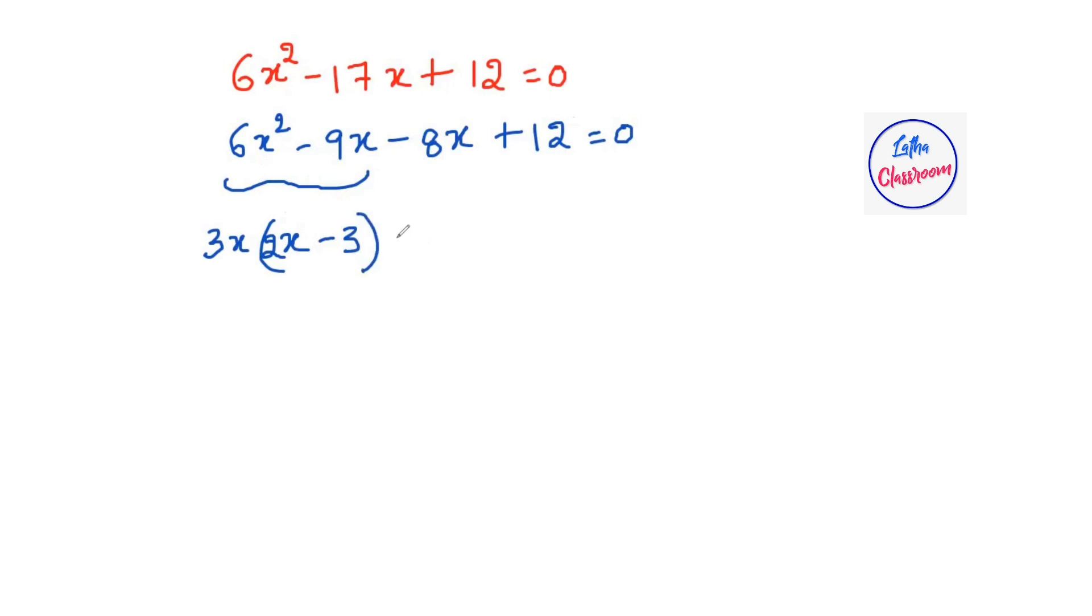And the second two terms, -8x + 12. What is common here? -4 is the common factor. So we get -4(2x - 3) = 0.